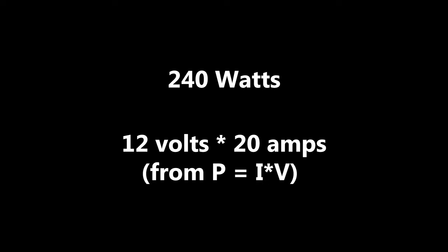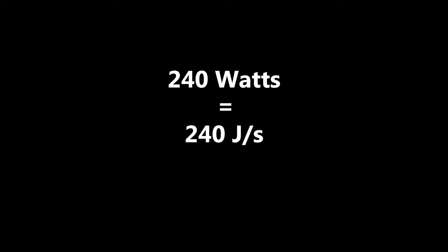Traditionally, the standard minimum power supply for a 3D printer is about 240 watts. To be more specific, this 240 watts is determined by multiplying the voltage, which in this case for the 3D printer is 12 volts, by the electrical current, which in this case is 20 amps. This means that for the 3D printer, it requires 240 joules of electrical energy to run per second.